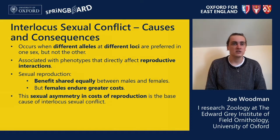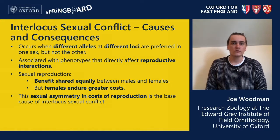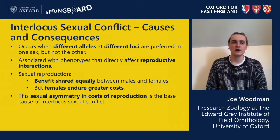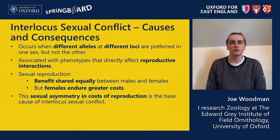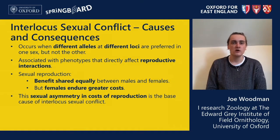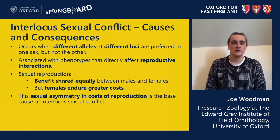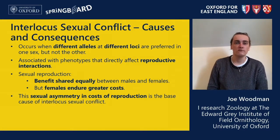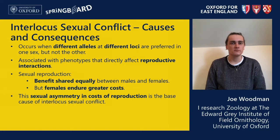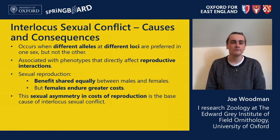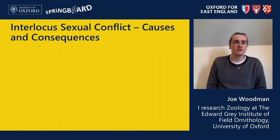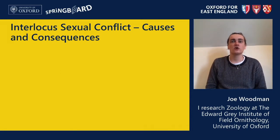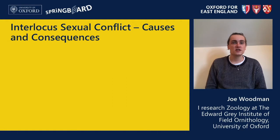Males generally lose little during reproduction, as their gametes are disposable because they create so many, and they generally don't provide as much care for fertilised embryos and future offspring as females do. Think of pregnancy in mammals, where it's almost always the female that invests much more into future offspring. So males want to reproduce as much as possible, as the cost is lower for them, whereas the cost of reproduction for females is higher, and so they don't want to mate at the same rate. It's this aspect that causes interlocus sexual conflict, as males and females want different outcomes when it comes to the rate of producing offspring.